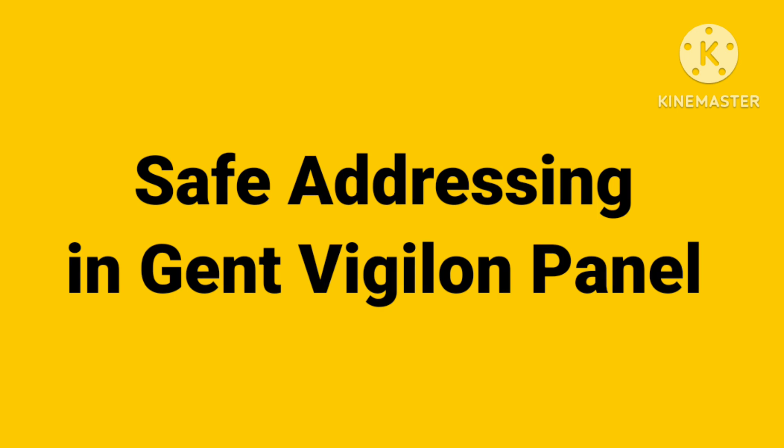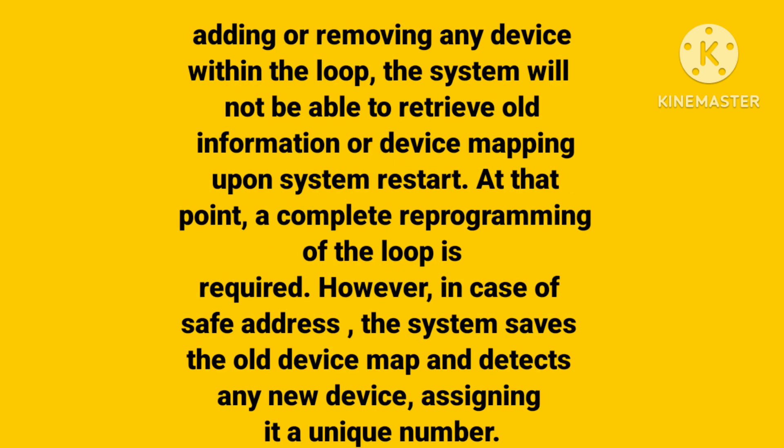In Gent Vision Panel, if we change our loop mapping or device locations — for example, if you remove any device from the loop and then reallocate the loop — the panel is not able to read the previous or old mapping. It will assign a new address. For example, if you remove device five from the loop, then in the new location, six will become five, and so on.